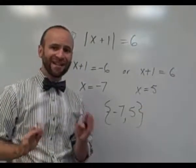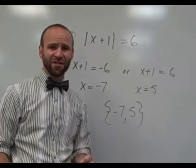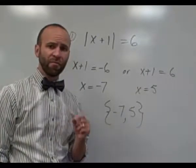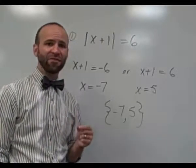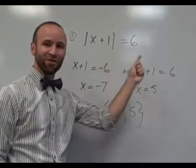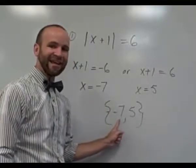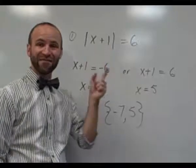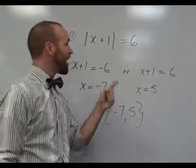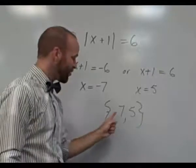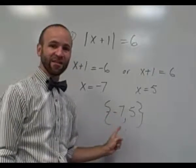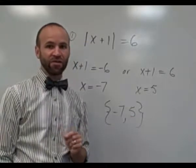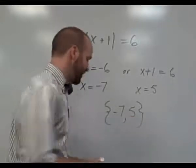Be careful — that doesn't mean negative seven and five are the two numbers six units away from zero. When we solve an equation, we're finding values of x that make the statement true. If you replace x with negative seven, you get negative seven plus one, which is negative six, and the absolute value of negative six is positive six. So negative seven is a valid solution, and you can likewise check five and it works as well.